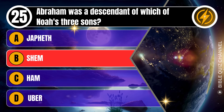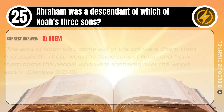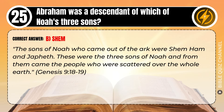Correct answer: B. Shem. Explaining the Bible — The sons of Noah who came out of the ark were Shem, Ham, and Japheth. These were the three sons of Noah, and from them came the people who were scattered over the whole earth. Genesis, chapter 9, verse 18 to 19.